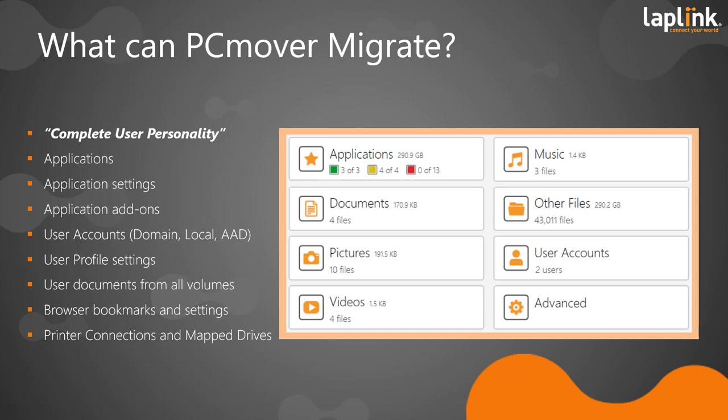That combination of those three levels — applications and their settings on top, user accounts (even multiple user accounts on the same machine), the settings for those users, and documents wherever they may reside on the machine — constitutes the complete user personality that PCMover transfers.